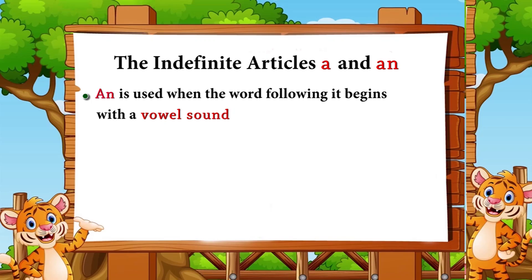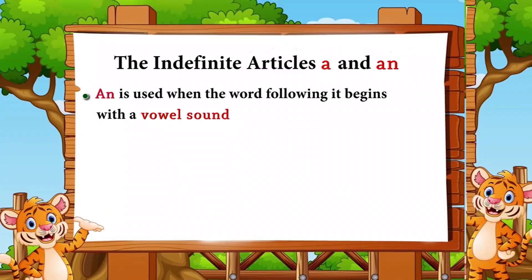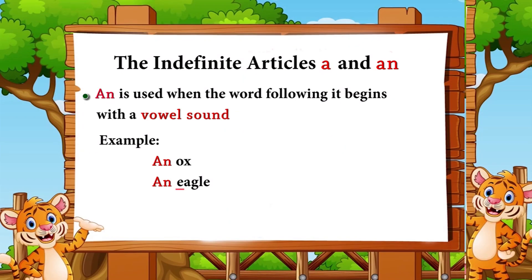On the other hand, 'an' is used when the word following it begins with a vowel sound. Example: 'an ox' — 'o' is a vowel sound. 'An eagle' — 'a' is a vowel sound.